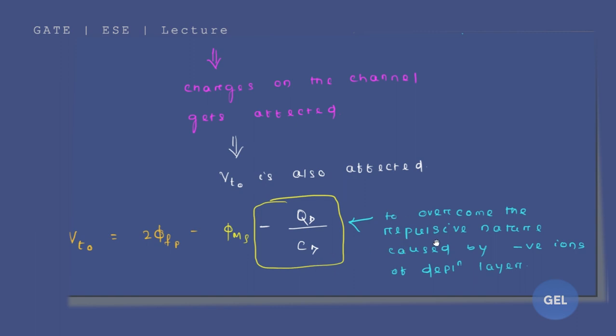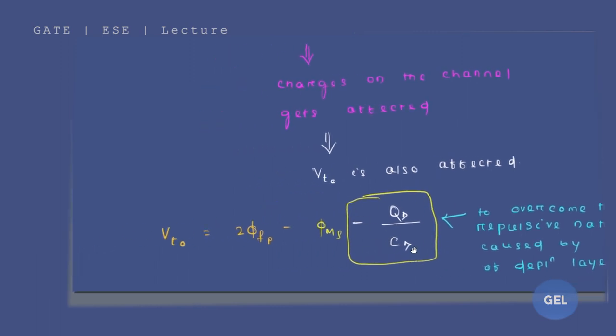We are going to provide another term that is minus QD by CD to overcome the repulsive nature caused by negative ions of the depletion layer. So we are considering for n channel MOSFET. We will consider negative ions of repulsive nature. And to overcome that we are going to apply minus QD by CD. So we are going to add this one more term to our final expression.